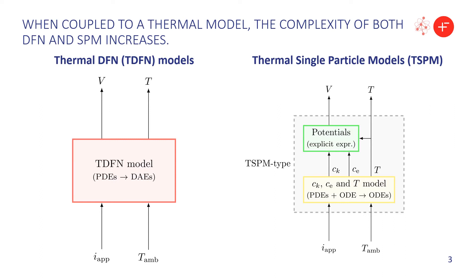For the TSPM models — thermal single particle models — we still keep this two-step structure. Now the concentrations and temperatures need to be solved together, which is a system of coupled PDEs and ODEs, but after discretization it is still a system of ODEs. Everything else — potentials, currents, and so on — comes from explicit expressions. So despite having this extra input and extra output, the problem is much, much simpler.